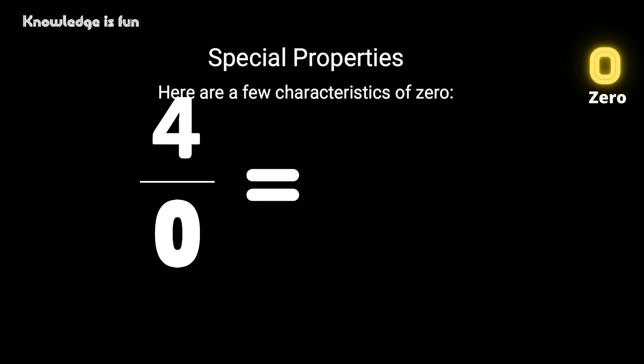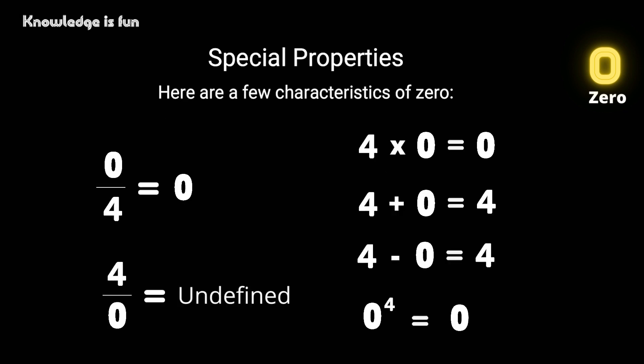Now when we have four divided by zero, what do you have? If you use the calculator, it will tell you it is undefined. That means it is not possible for you to divide a number with zero.